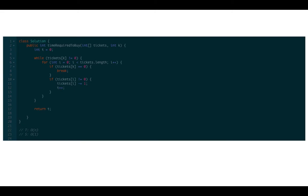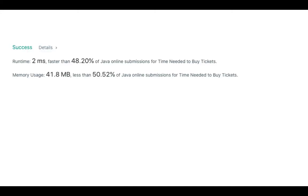Let's work through the code. While tickets[k] is not equal to 0, we iterate over the array with a for loop. If tickets[k] is equal to 0, we terminate the loop. If tickets[i] is not equal to 0, we decrease the value by 1 and increase t by 1. Time complexity is O(n). Space complexity is O(1). The solution works.